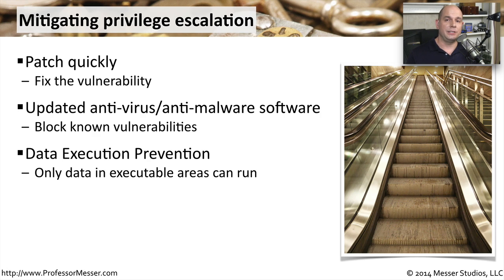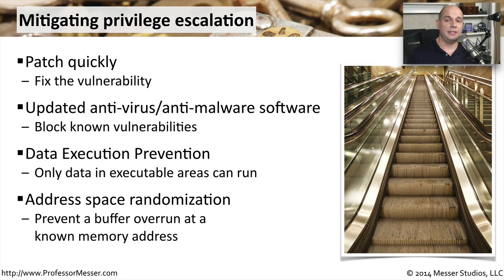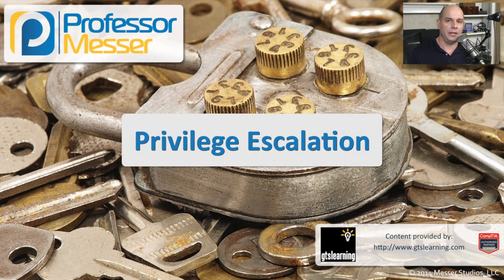Many modern operating systems use a technology called data execution prevention. This keeps the executable running only in areas where it's allowed and prevents it from going outside that area and allowing a privilege escalation. Another operating system feature is called address space randomization, where the data is put in many different places and it's randomized every time. This prevents malicious software from being able to take advantage of a buffer overflow, because there's not a known memory address where certain data might always be located.